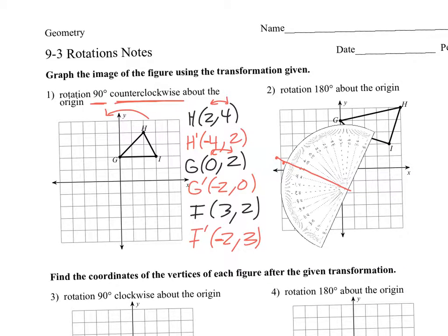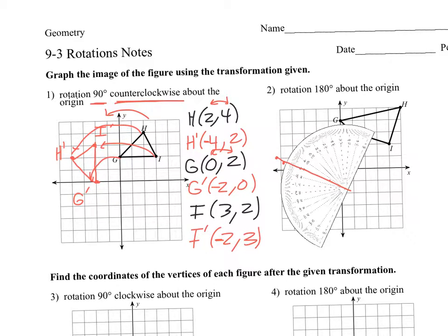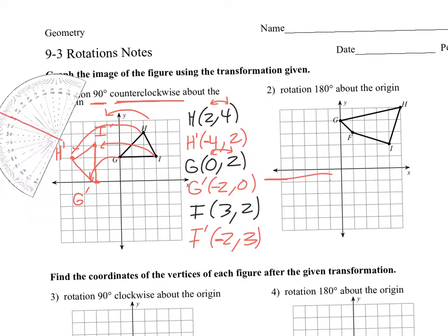So we plot our new points. H prime was at negative 4, positive 2 — there's H prime. G prime is at negative 2, 0. And then I prime is at negative 2, 3. There's I prime. So if I draw that shape — hopefully you can kind of see how that rotation has taken place. H here, I here, and G here — counterclockwise.